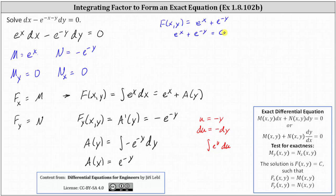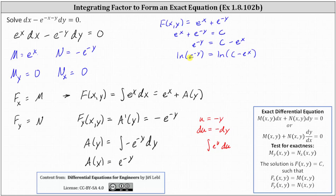Let's go ahead and solve for y. We subtract e to the x on both sides, giving us e to the negative y equals c minus e to the x. Next we take the natural log of both sides. Applying log properties on the left, the natural log of e to the negative y equals negative y times natural log e, and since natural log e is one, we get negative y equals the natural log of the quantity c minus e to the x. Multiplying both sides by negative one, we have y equals negative natural log of the quantity c minus e to the x as our general solution.